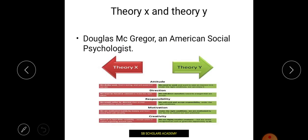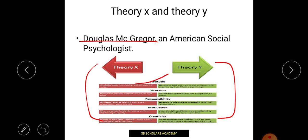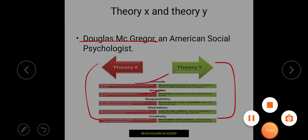Next theory is Theory X and Theory Y, given by Douglas McGregor, an American social psychologist. In his theory, you can see Theory X is highlighted in red and Theory Y in green. He described five aspects: attitude, direction, responsibility, motivation, and creativity.